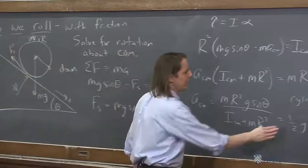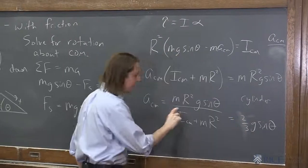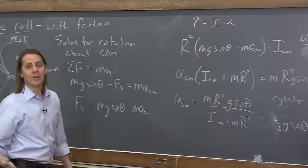Except, I'm sorry, it's two-thirds. For a solid cylinder, it's two-thirds. Because this is one-half mr^2, three-halves, upside down, two-thirds. But the point is, it's the same answer.